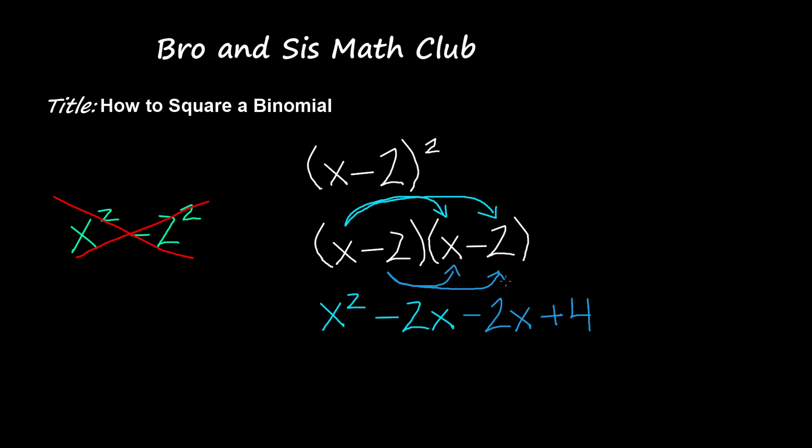Now once I have this polynomial, I'm going to combine the like terms. So first I'm going to bring down x squared as it is because we know that there is no other like term for x squared. And now we see that there are two like terms that are negative 2x and negative 2x.